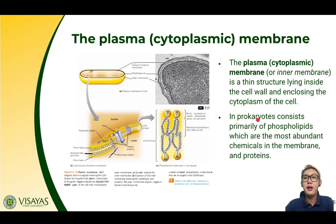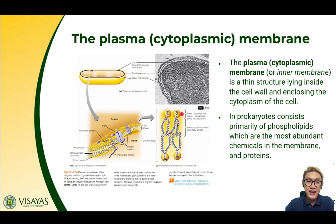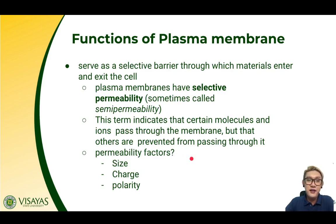The plasma membrane, or cytoplasm membrane, or inner membrane in gram-negative bacteria, is a thin structure lying inside the cell wall and enclosing the cytoplasm of the cell. In prokaryotes, it consists primarily of phospholipids, which are the most abundant chemicals in the membrane, as well as proteins. A phospholipid molecule is composed of a hydrophilic head and a hydrophobic tail, making up a double layer because the hydrophobic tails form hydrophobic interactions, so all the hydrophilic heads are in contact with the watery environment outside and inside the cell. The plasma membrane serves as a selective barrier through which materials enter and exit the cell.